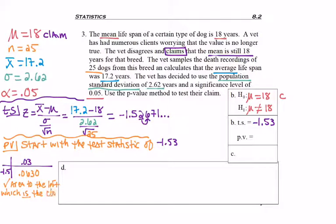This is the area to the left, which is the closest edge. I have a negative test statistic, so I'm on the left side of the standard normal curve, and this table finds area to the left of the standard normal curve.